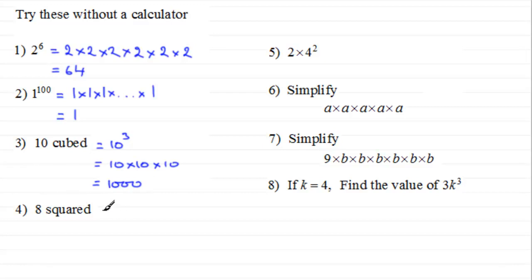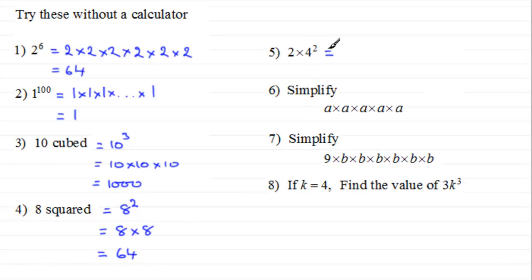Number four: eight squared is eight to the power two, in other words eight times eight — eight eights are sixty-four. Number five: two multiplied by four squared, which is two multiplied by four times four. Four fours are sixteen, and two sixteens are thirty-two.